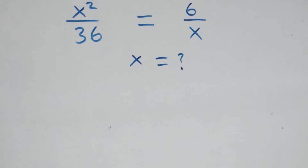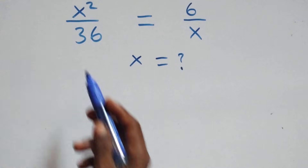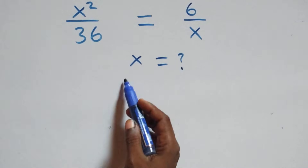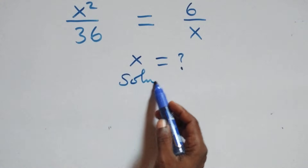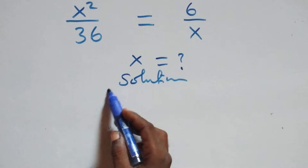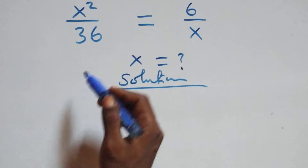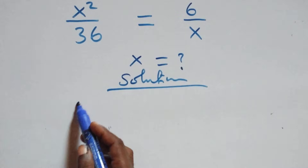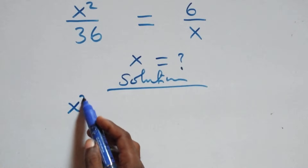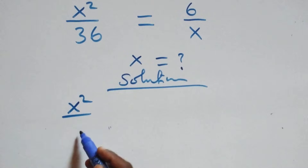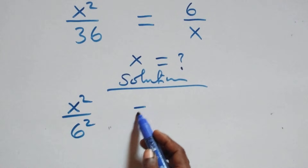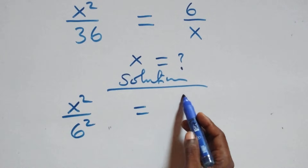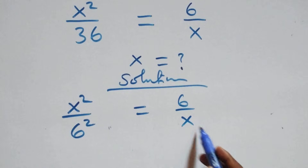Hello, welcome. How to solve this nice exponential equation. What we have here, we can rewrite this as x squared over 36, that is 6 times 6 which is also 6 squared, equals 6 over x.